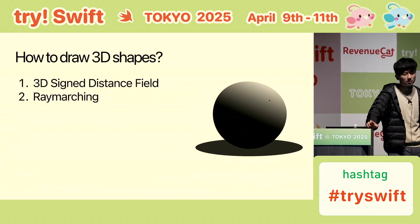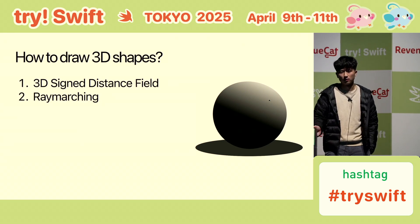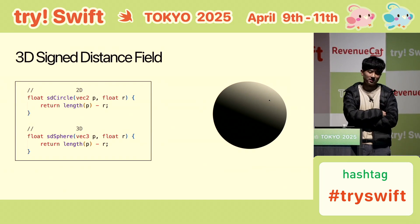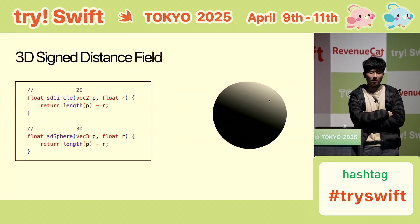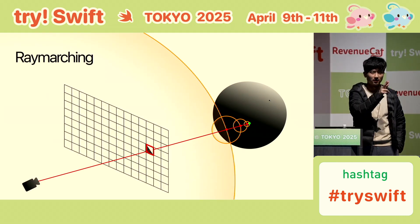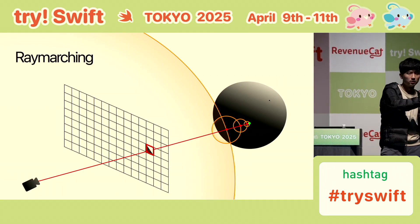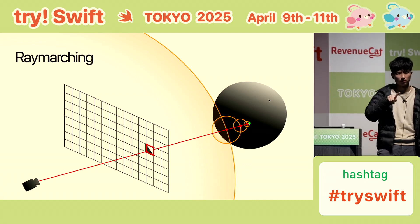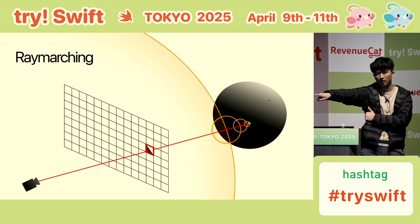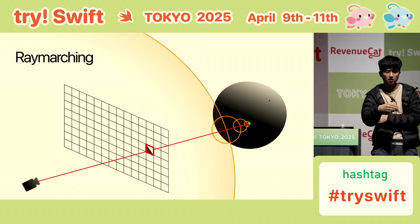Now how do you do 3D? We start with a 3D signed distance field, but we also need ray marching — basically like ray tracing, but optimized for signed distance fields. The 3D SDF is the same concept: inside vec3 you return the length of the point minus the radius. To show it on screen, for every pixel you have a camera and draw a ray through each pixel. The ray hits the sphere and ray marching gives us the distance from camera to sphere.